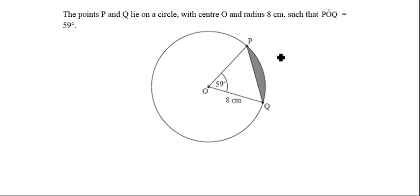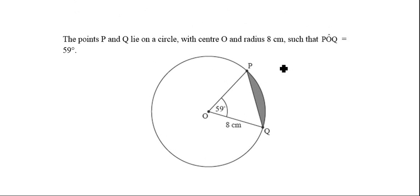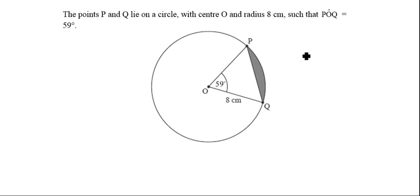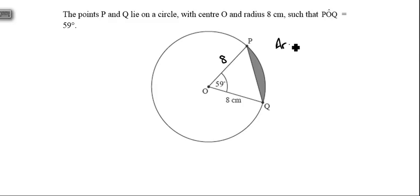Let's look at three questions to do with sectors and triangles. Here we've been given a triangle and we want to find the shaded region. First, we can fill in that the missing side must be 8 as well, and we know that the angle is 59°. We can approach this in two ways — let's find the area of the sector.